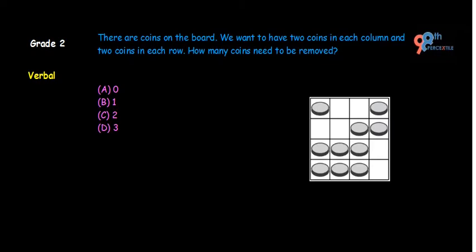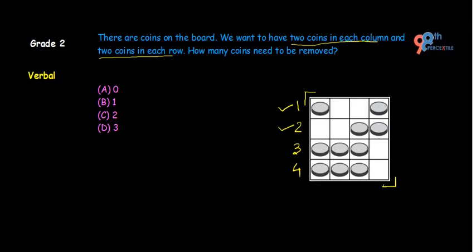This is the board we are talking about. Let us check the rows first. We have 4 rows. In the first row we have 2 coins. As per the question we need 2 coins in each row and column, so the first row already has 2 coins. In the second row we also have 2 coins. In the third row we have 3 coins, and in the fourth row we have 3 coins. That means from the third row 1 coin needs to be removed.